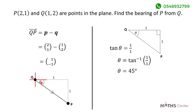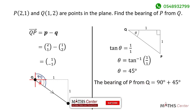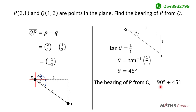So the angle theta formed here is 45 degrees. The bearing of point P from K is measured from the geographic north to the line joining the two points. We already know the angle at this point is 90 degrees, and we found theta to be 45 degrees. So the bearing of P from K equals 90 degrees plus 45 degrees, which gives us 135 degrees. The bearing of P from K is 135 degrees.